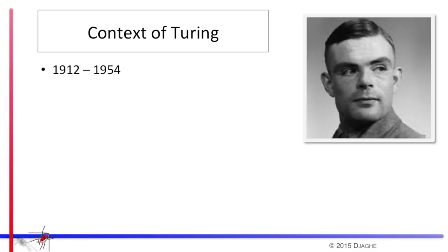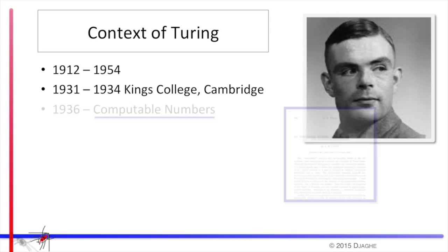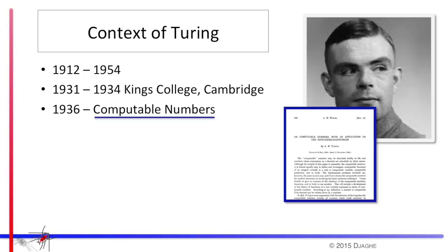That life lasted from 1912 to 1954. He was a British mathematician. And in 1931, like many skilled mathematicians, he went to King's College at Cambridge in order to get his bachelor's degree. At the end of that period, in 1936, he published a paper called Computable Numbers, which was the first major contribution he made. And at some level, if that's all that he did, he would be considered an important mathematician to this day.